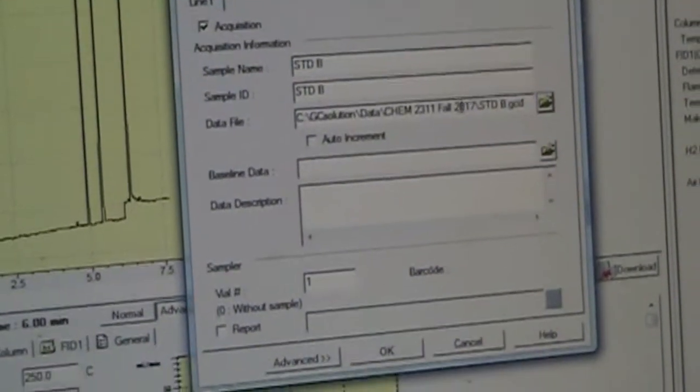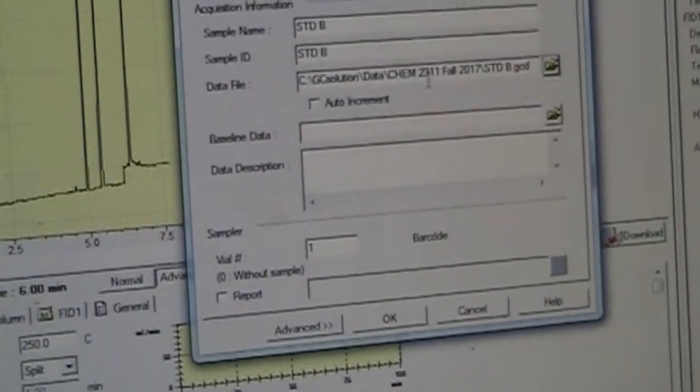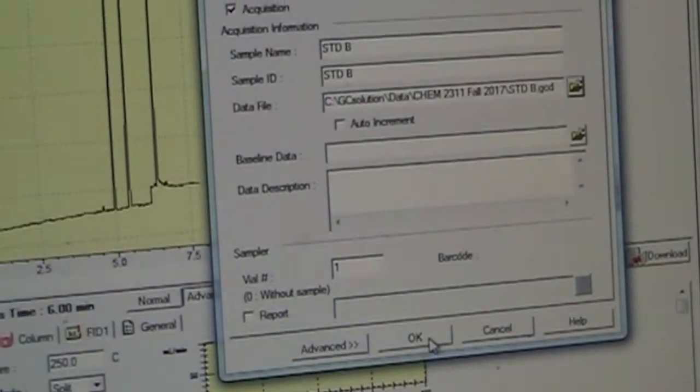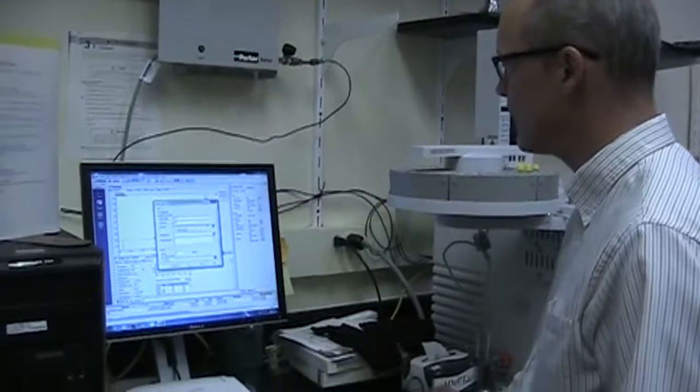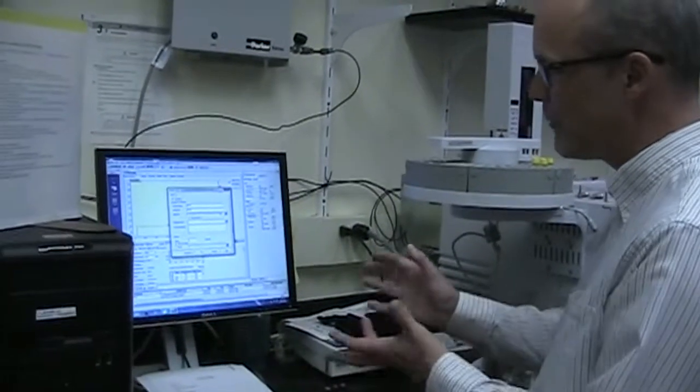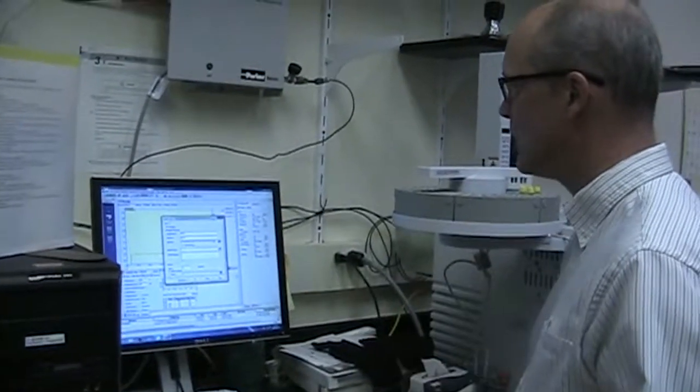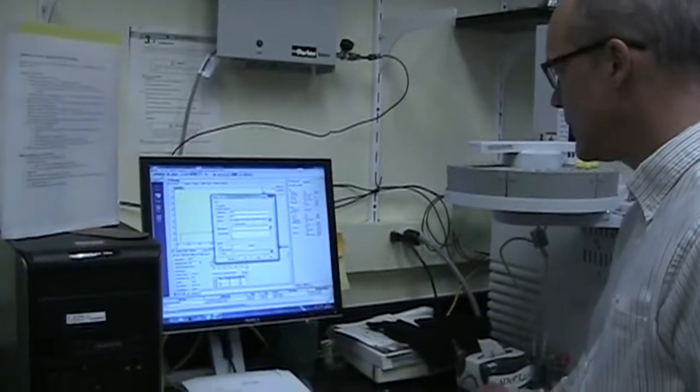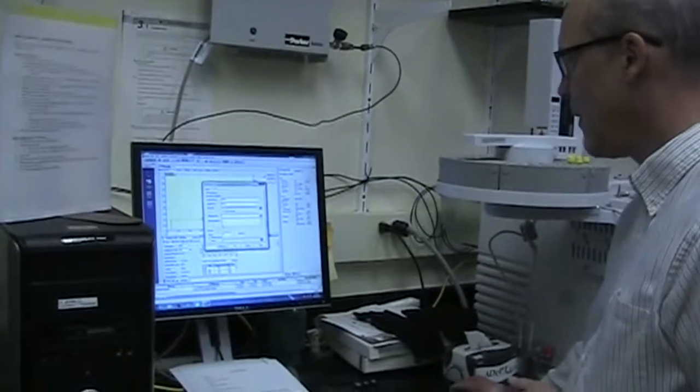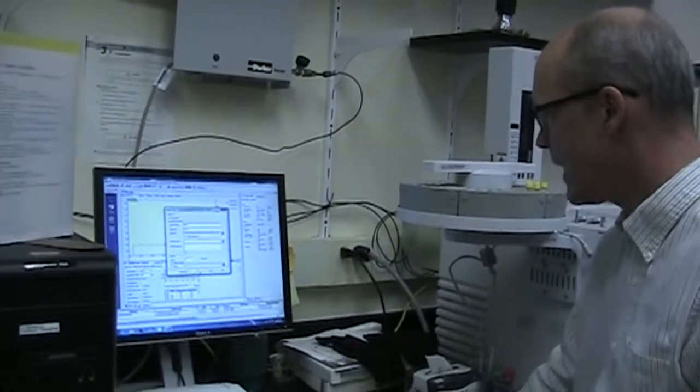Not real original here, but the sample name, the sample ID, and the data file are all going to just basically describe the sample. When you get to your actual samples, you can say aftershave, or bourbon, or moonshine, whatever the sample happens to be. So once you've entered those three things on the sample login, you simply say okay there.